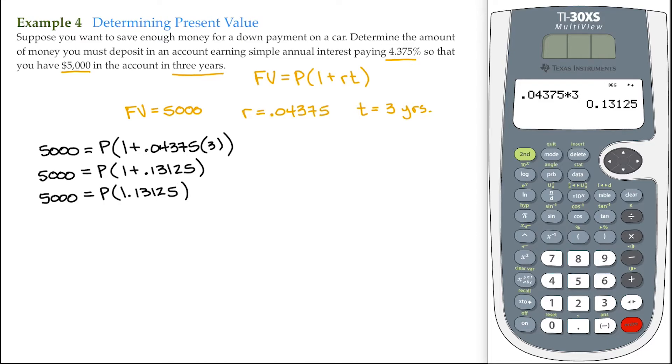Now I can use some simple algebra. I'll divide both sides by 1.13125, and I'll divide this side by the same. These will cancel, that's the whole idea. So then I'll take the $5,000 and divide that by 1.13125.